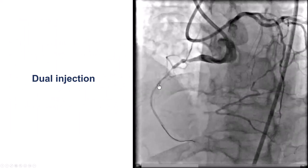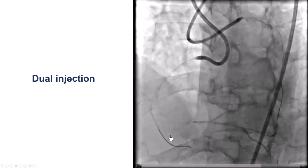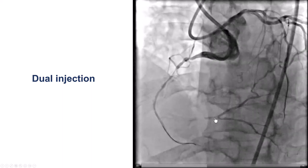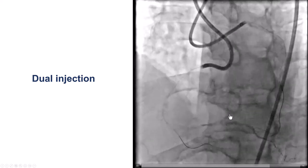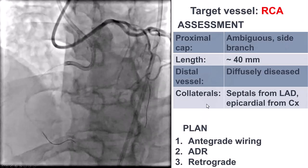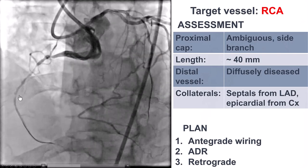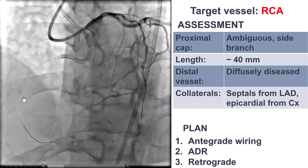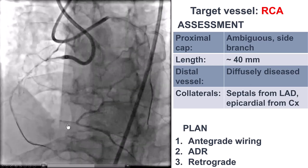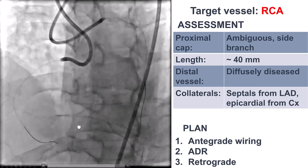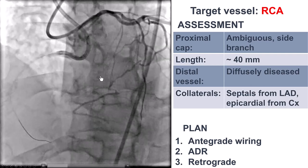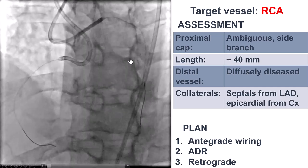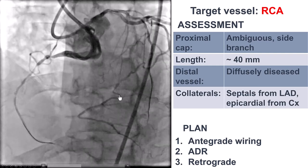This is the anatomy. We do have a CTO of the mid-RCA at the takeoff of a large acute marginal branch. There is diffuse disease and calcification on the distal RCA. There is a bifurcation of the PDA and a large right posterolateral. We have an ambiguous proximal cap at the takeoff of the acute marginal, length of about 40 millimeters, diffuse disease and calcification of the distal vessel, and the bifurcation of the PDA-PLV. There are some septal collaterals coming from the LAD, and also a large epicardial collateral coming from the circumflex.